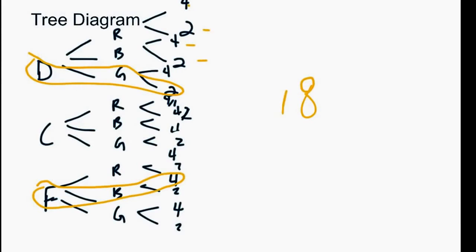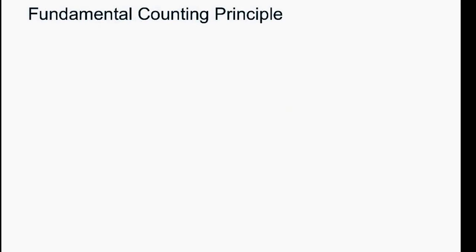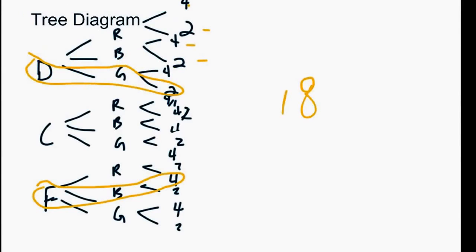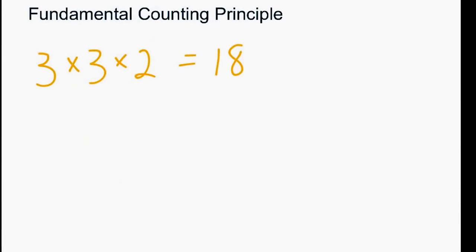So the fundamental counting principle basically deals with a lot of this stuff, but it's an easier and quicker way to do it. If we go back to the truck one, you see we had three choices for trucks, then we had three choices for colors, and then two choices for the last one. So all we'd have to do is three for the first choice, times three for the second choice, times two for the last choice, and that gives us the 18. So fundamental counting principle, you basically just multiply each number of choices all the way through the process.